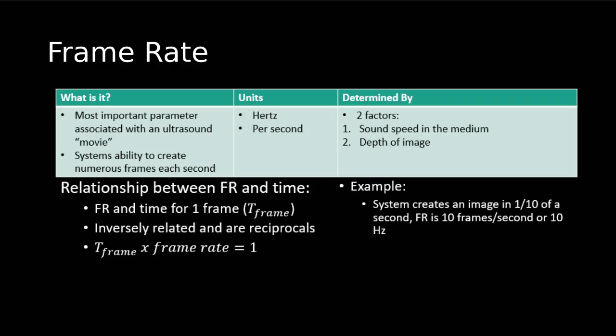Frame rate is the most important concept for our system's ability to image certain structures seamlessly — how seamless can we make that movie? It's our system's ability to create numerous frames per second, measured in hertz. It's determined by the depth of our image and the speed of sound in the medium. We can affect some components of our frame rate, but the speed of sound in the medium we can't really control. So we can manipulate frame rate a little, but it is ultimately also determined by the speed of sound in that particular tissue.